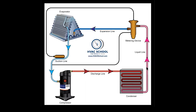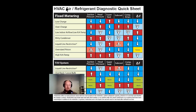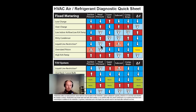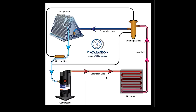They think that refrigerant is going to back up against this restriction and cause high head pressure in the condenser. But if you look at this refrigerant diagnostic quick sheet, it shows right here that your suction pressure will be low — that's sort of the defining characteristic, one of the first things techs always look for. And your head pressure is actually going to be normal to low.